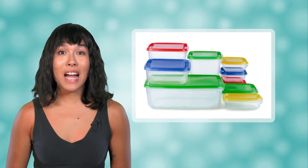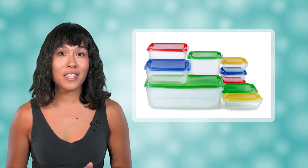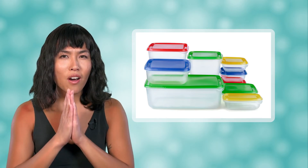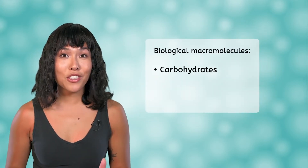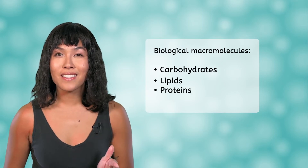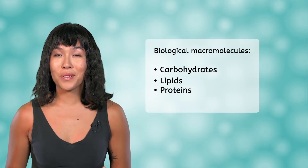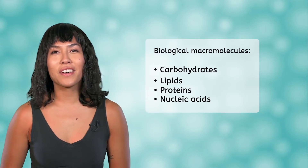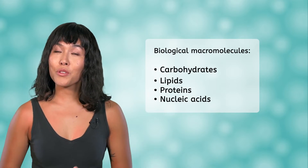Not all macromolecules are biological, meaning they come from or exist in living things. For example, plastics are composed of macromolecules. However, in the next few lessons we will focus specifically on three categories of biological macromolecules: carbohydrates, lipids, and proteins. We'll learn more about the fourth category of macromolecules, nucleic acids, in Unit 5. Let's jump in today with carbohydrates, starting with simple sugars.